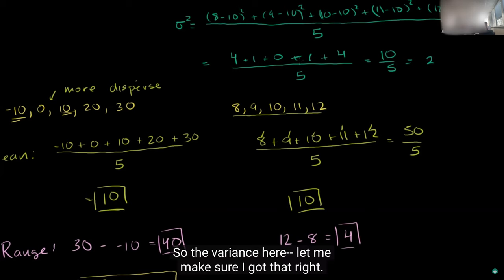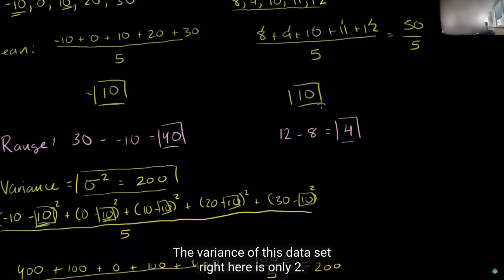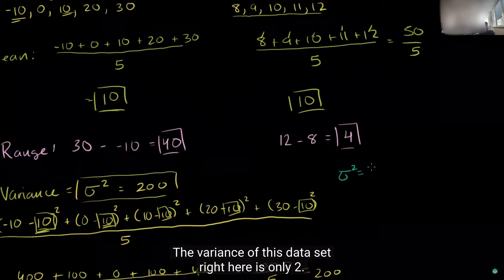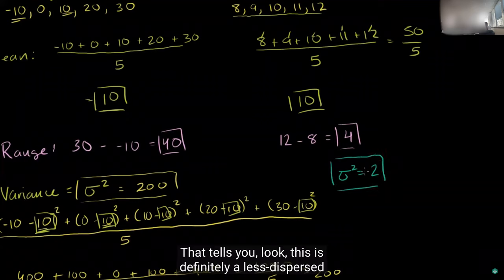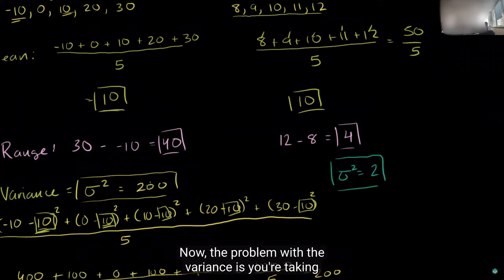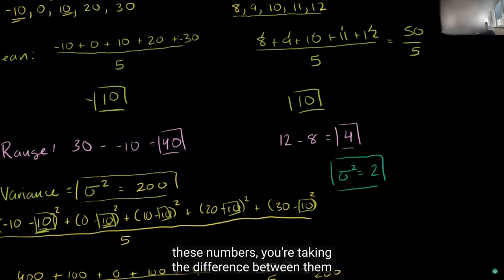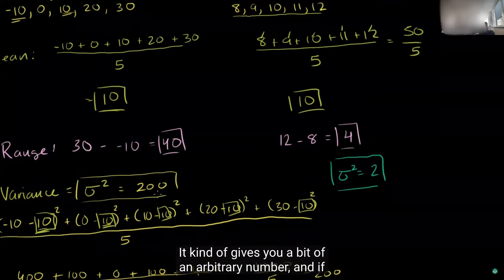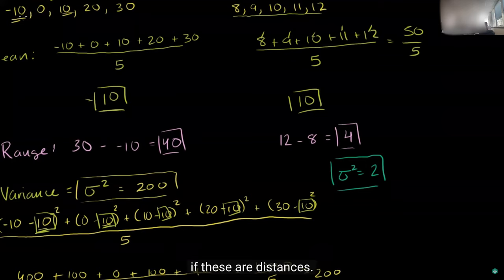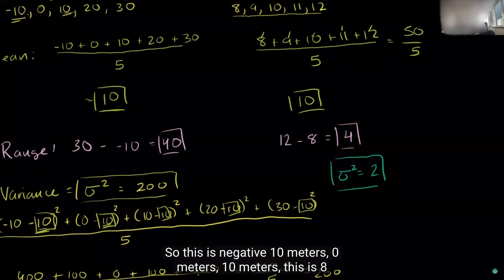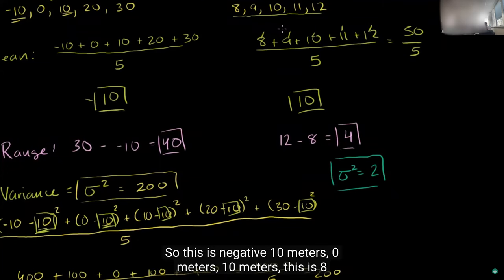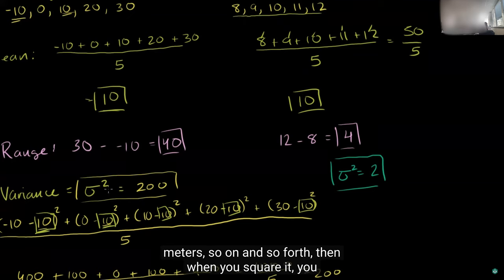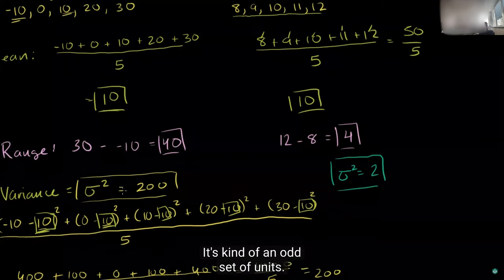So the variance of this less dispersed data set is only 2, compared to 200 for the first. That tells us this is definitely a less dispersed data set. Now, the problem with variance is that after squaring the differences, you get a somewhat arbitrary number. If you're dealing with units — say these are distances in meters — you get your variance in meters squared, which is an odd unit.